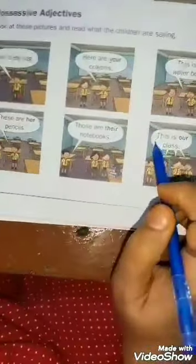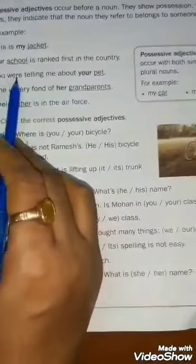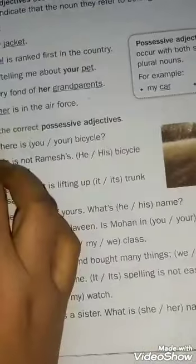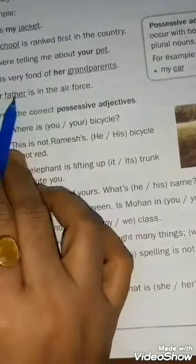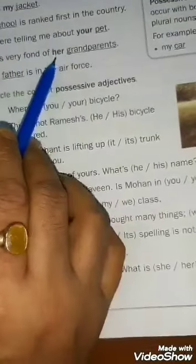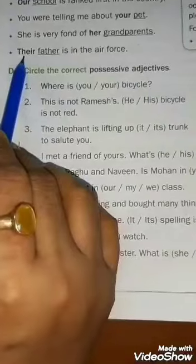So students, always remember that possessive adjectives are used before a noun. More examples: 'This is my jacket.' 'Our school is ranked first in the country.' 'You were telling me about your pet.' 'She is very fond of her grandparents.' 'Their father is in the air force.' Here, jacket, school, pet, grandparents, and father are all nouns, and before each noun there are possessive adjectives: my, our, your, her, and their. So you will understand that possessive adjectives are always used before a noun.